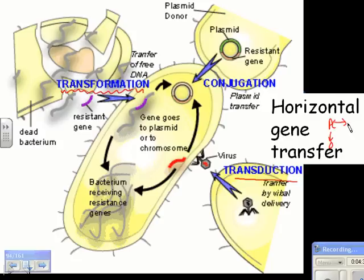Transduction happens when a bacterium is infected by a virus. The virus makes more copies of itself, but by accident grabs a little bit of the bacterial DNA along with the viral DNA. That bacterial DNA — which may carry a resistance gene — can then get into a new bacterium when the virus infects it.